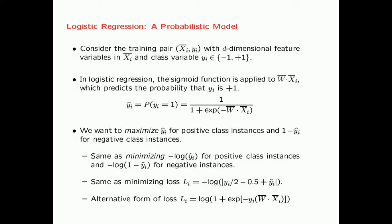We can write this loss in an integrated form, which is essentially the negative logarithm of the modulus of Y_i divided by 2. The first Y_i is the observed value of Y_i minus 0.5 plus Y_i-hat, which is the predicted value. There is also an alternative form expressed directly in terms of the class variable and the weight vector: the logarithm of 1 plus exp(minus Y_i * W · X_i).